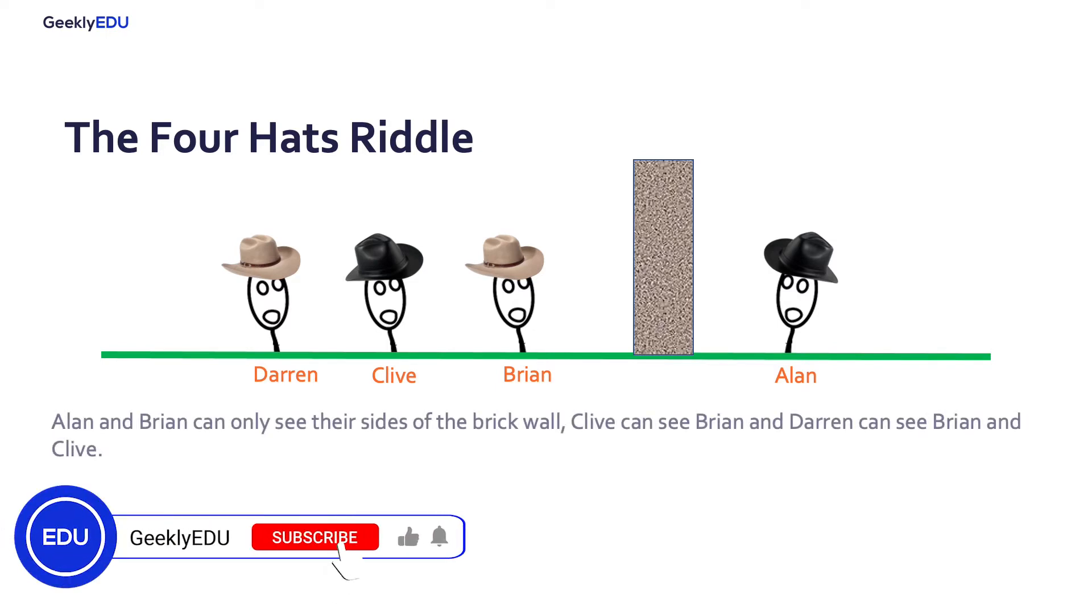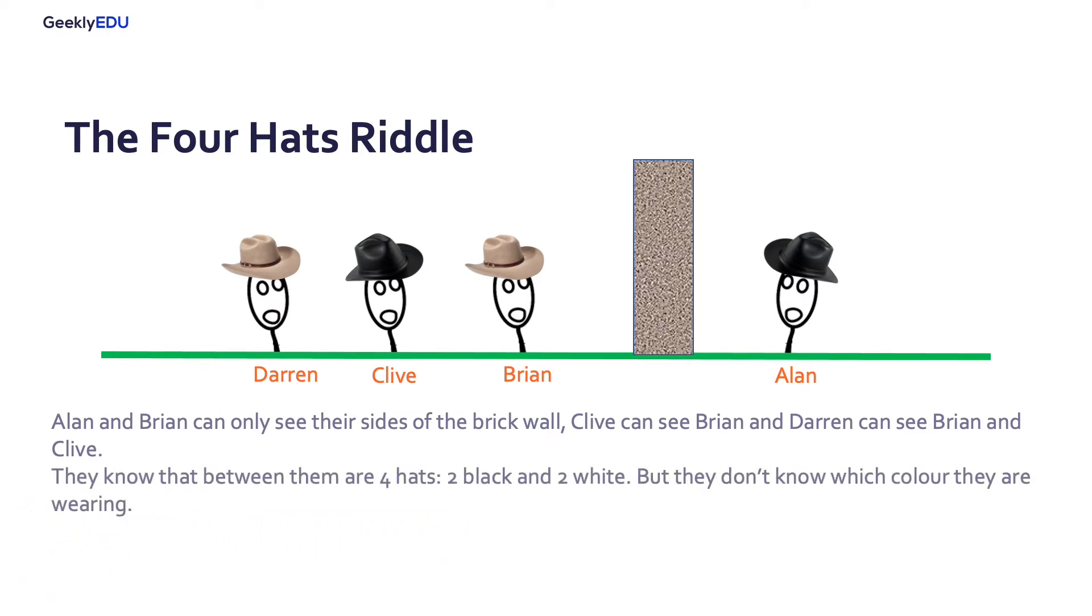Alan and Brian can only see their sides of the brick wall. Clive can see Brian and Darren can see Brian and Clive. They know that between them are four hats, two black and two white, but they don't know which color they are wearing. They are not allowed to talk to one another and there are no outside influences or other ways of communicating.